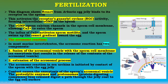The diagram shows resact from Arbacia jelly binding to its receptor on the sperm, activating the receptor guanylyl cyclase (RGC). This forms intracellular cyclic GMP, which opens calcium channels in the sperm cell membrane, allowing calcium ions to enter the sperm. The influx of calcium activates sperm motility and the sperm swims up the resact gradient towards the egg. Therefore, resact functions as both a sperm attracting peptide and a sperm activating peptide.